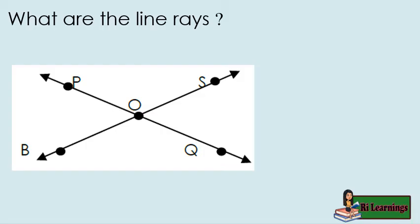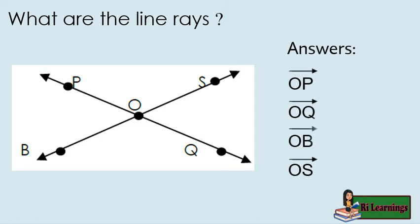What are the rays in the figure below? Points O and P, joined by a straight line segment which is extended at one side, forms a ray. Same with points O, Q; points O, B; and points O, S. Hence we get ray OP, ray OQ, ray OB, and ray OS.